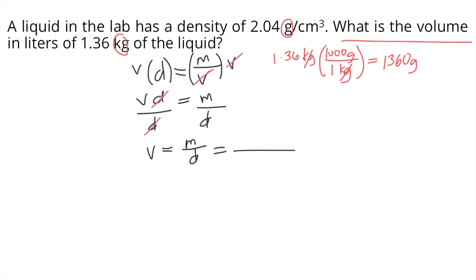Now you substitute that into the equation: 1,360 grams divided by the density, 2.04 grams per cubic centimeters.